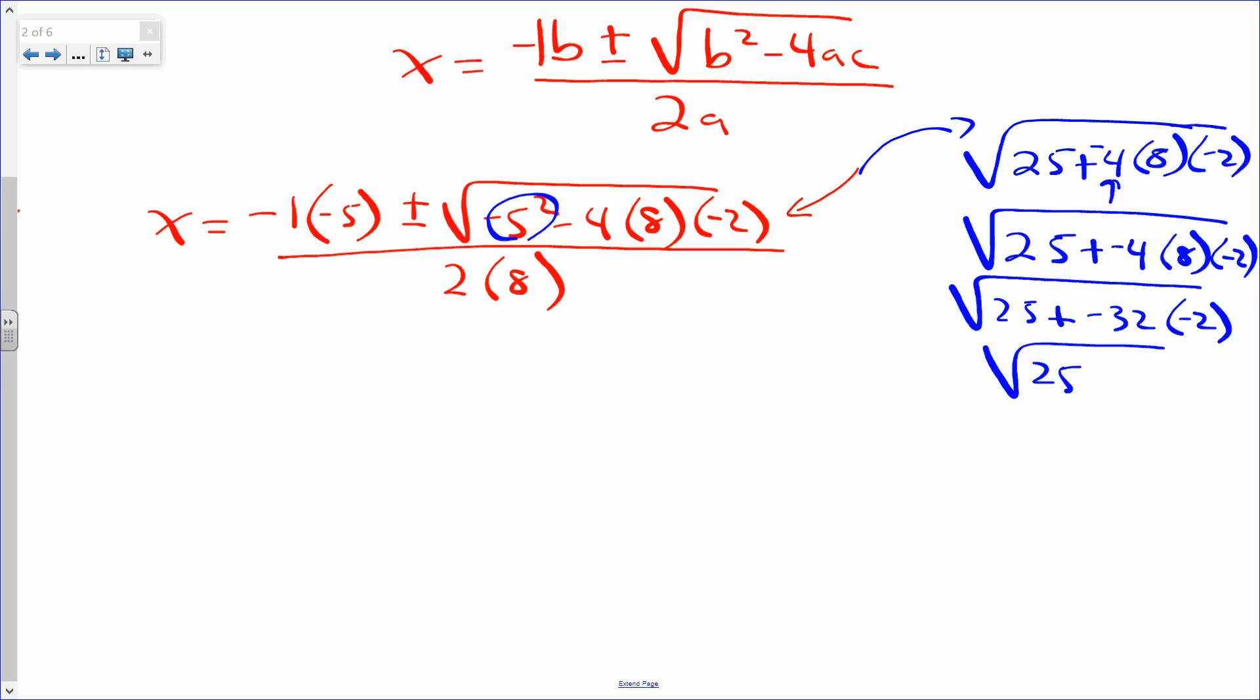Again, 25. Before we add, we have to multiply the negative 32 and the negative 2, which become positive 64. And this is going to be the square root of 89. Now, the square root of 89 is not a perfect square, so we're just going to leave it this way. So let's come back over here now and let's substitute all that expression underneath the square root symbol with the square root of 89.